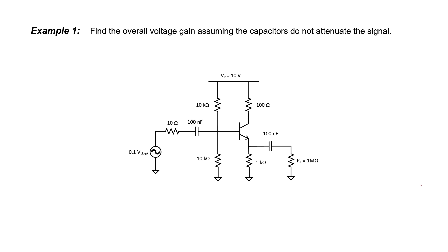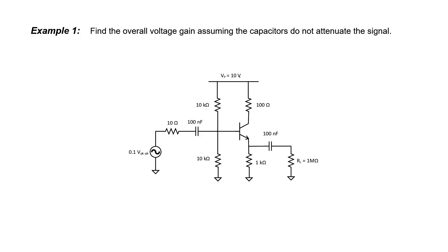Let's look at an example now and calculate the voltages in more detail, also considering the capacitors. We're going to assume that the capacitors do not attenuate the signal and we need to find the voltage gain. Because I can identify this as a common collector circuit, the gain is 1 — but we need to check all the underlying assumptions. Let's concentrate on the DC portion of the circuit and make sure the transistor is properly biased in the forward active mode.